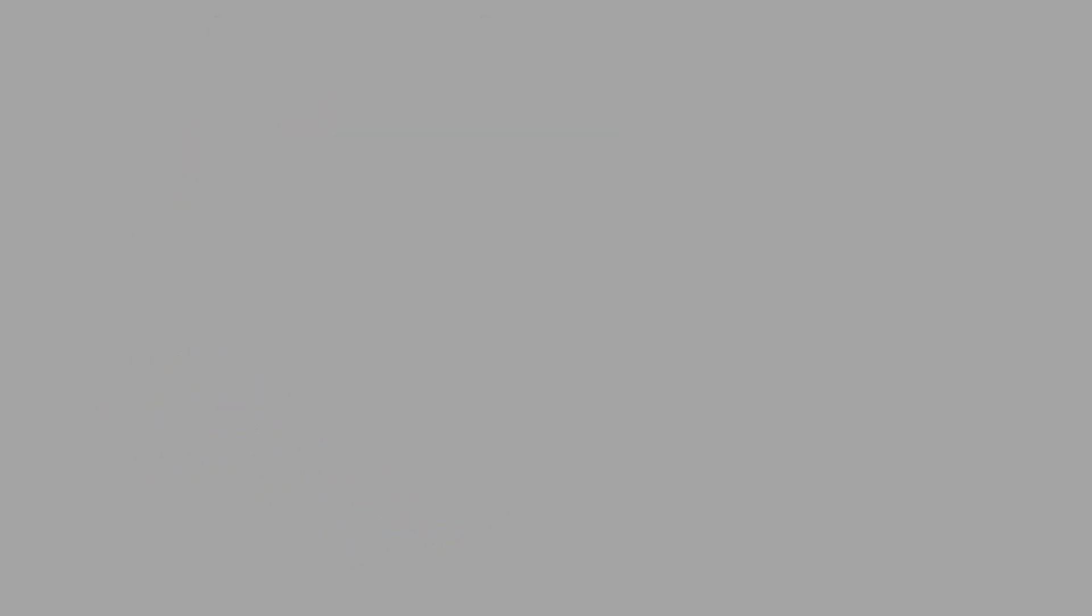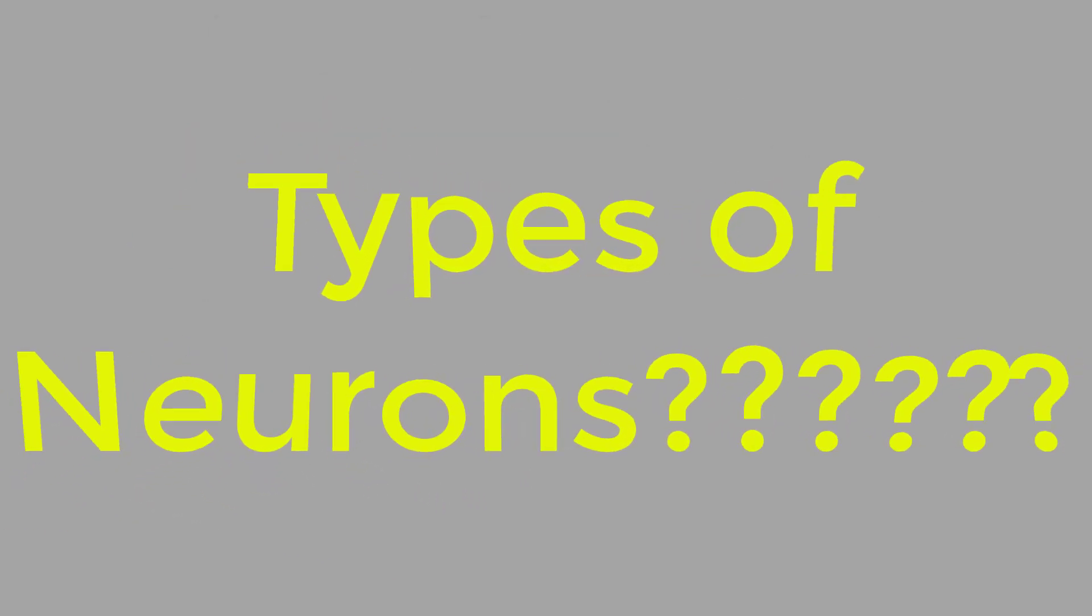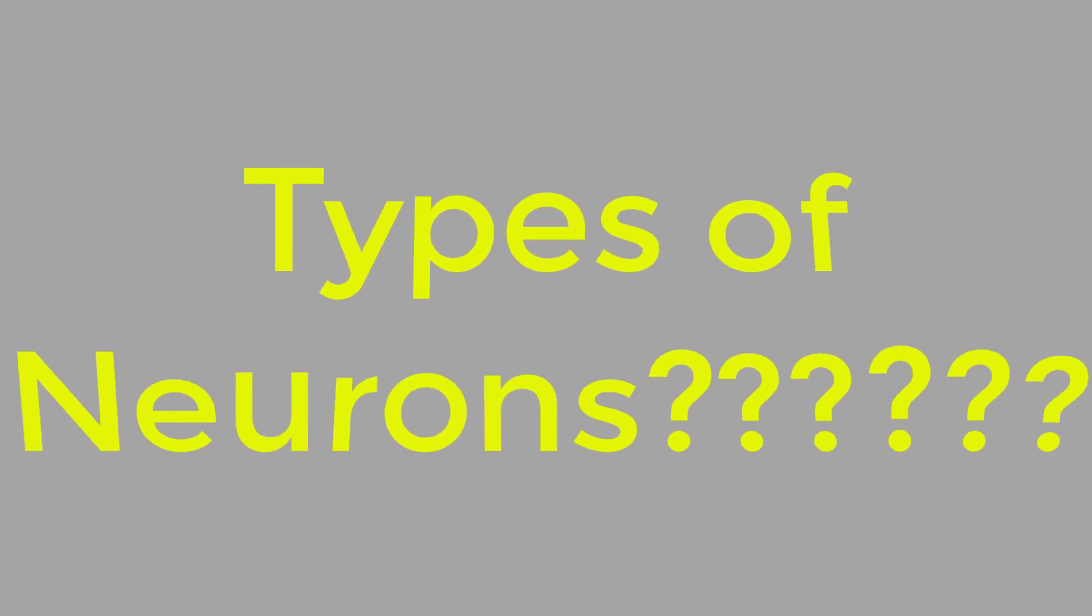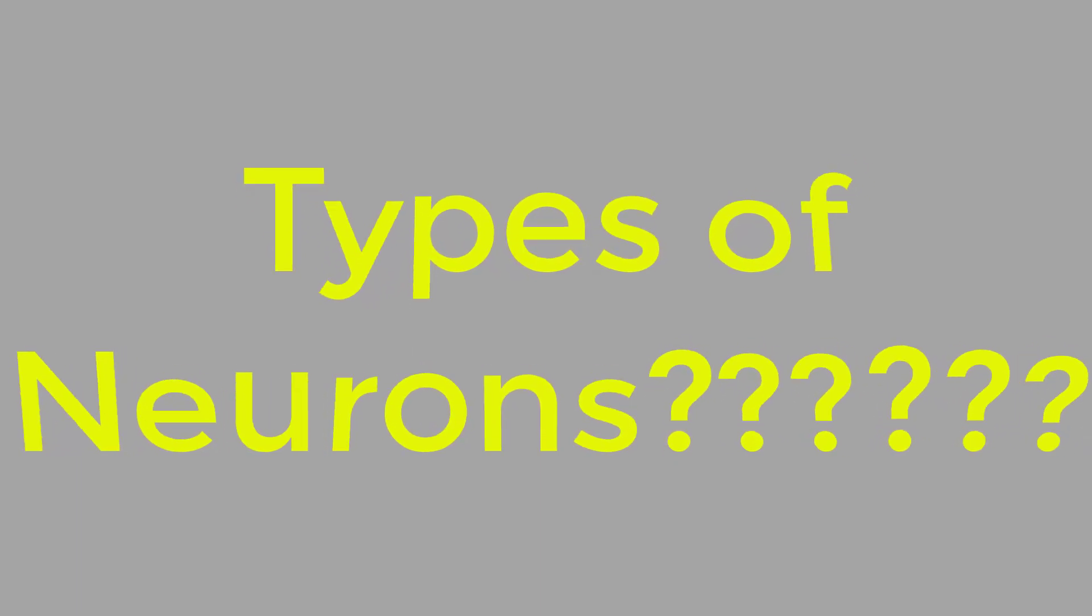The most frequently asked question about neurons is on their classification or the different types of neurons present. As said earlier, the structure of a neuron depends on its positioning, but all neurons are made up of the same three features: namely the cell body, the axon, and the dendrites.